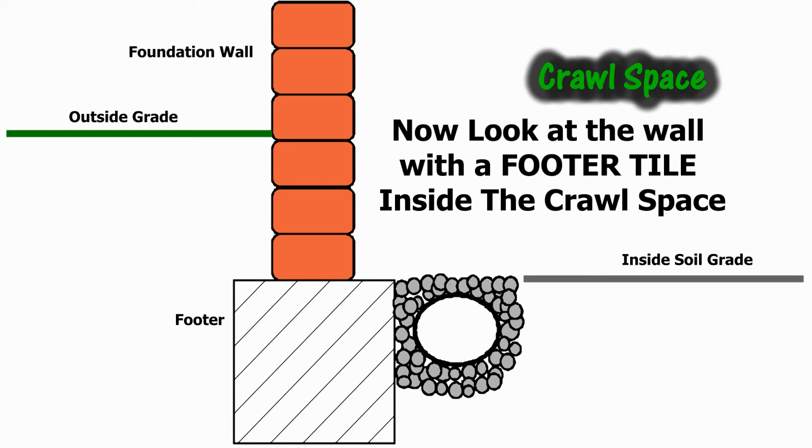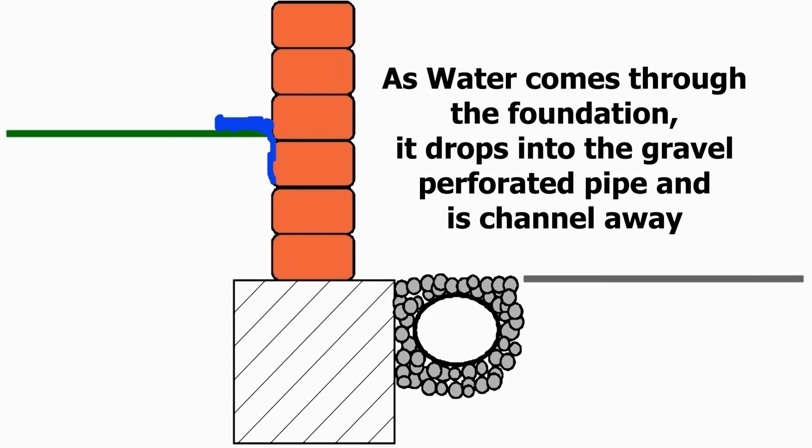Now look at the wall with a footer tile inside the crawl space. This time, as the water pools up on the outside and comes down along the brick wall, it will flood through the gravel and into the perforated pipe, which is channeled away to a sump pump.